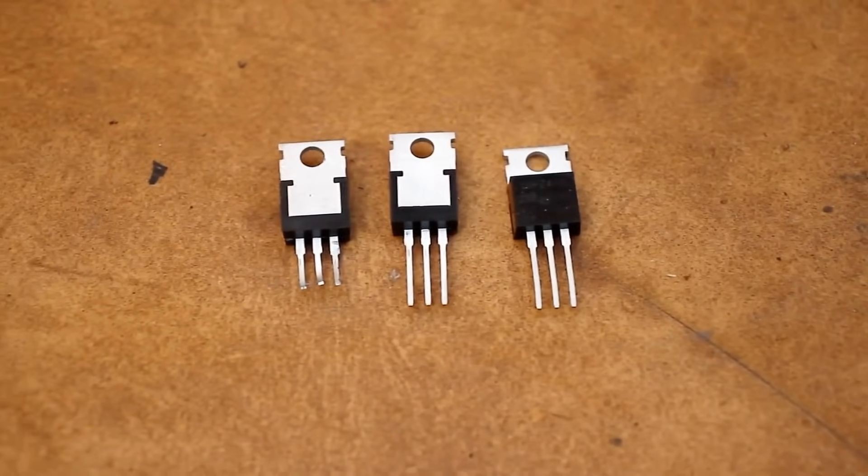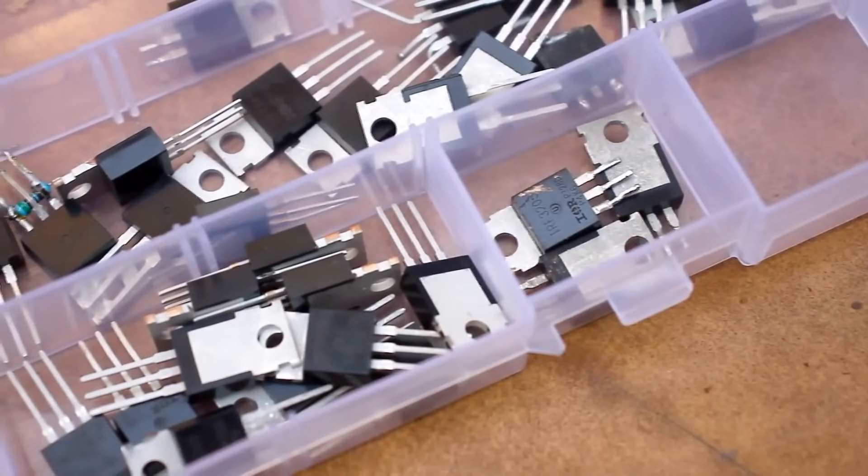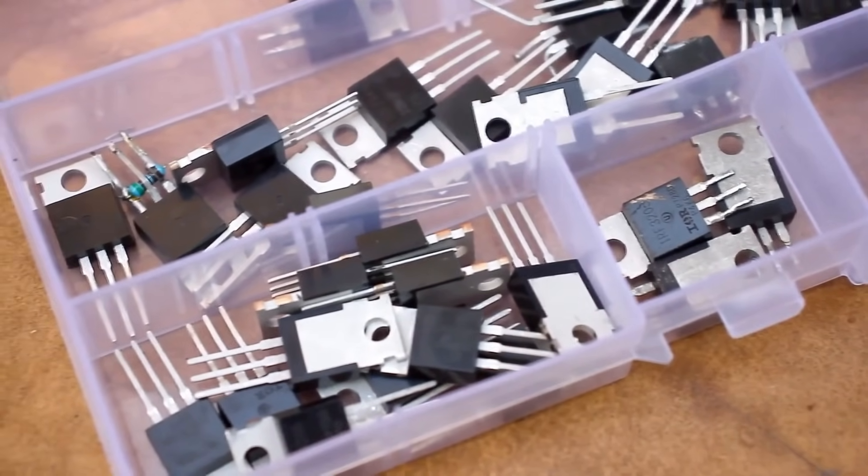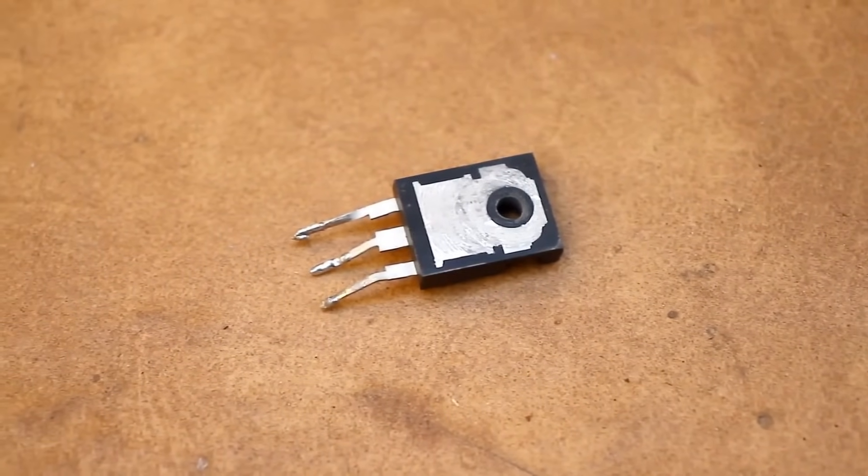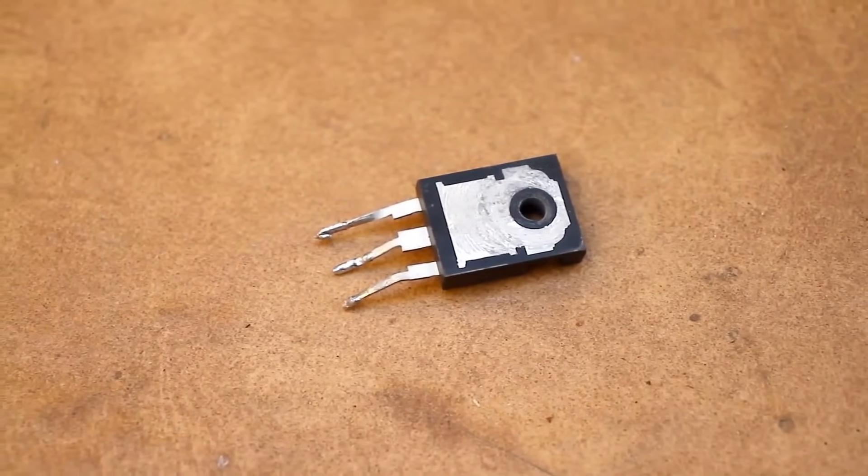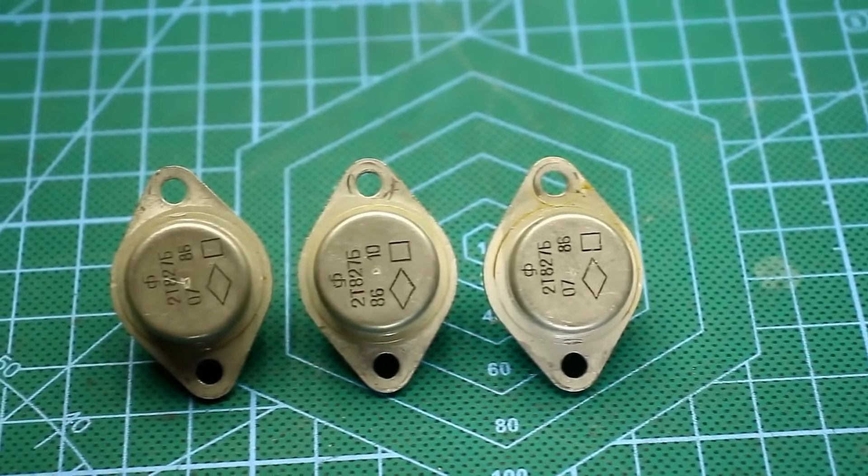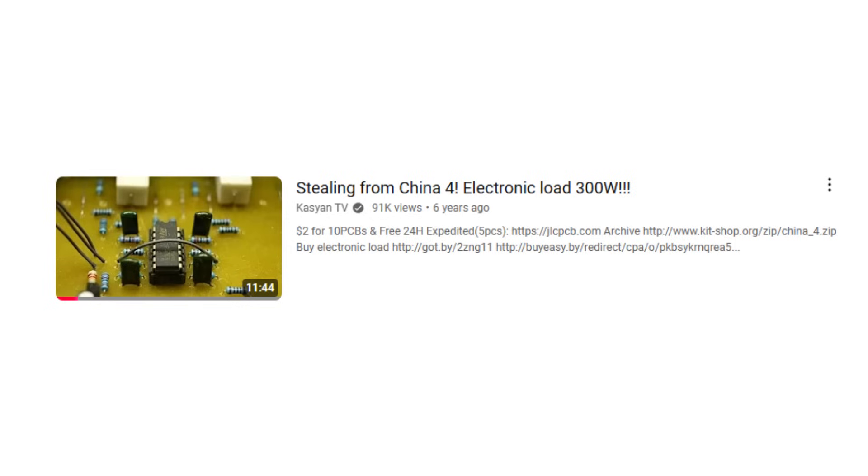If the electronic load uses transistors in a TO-220 package, the maximum load power will be no more than 80 watts, or 40 watts per transistor. If the transistors are in a TO-247 package, the maximum power is 150 watts. When using a transistor in a TO-3 package, the maximum load power is 200 watts, which means 100 watts per transistor.